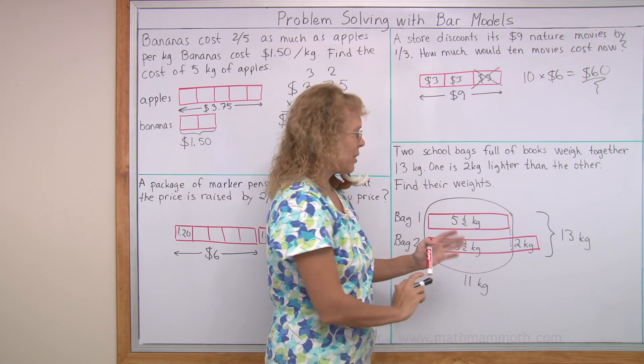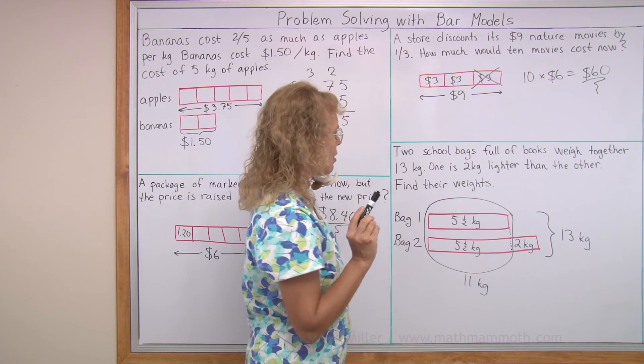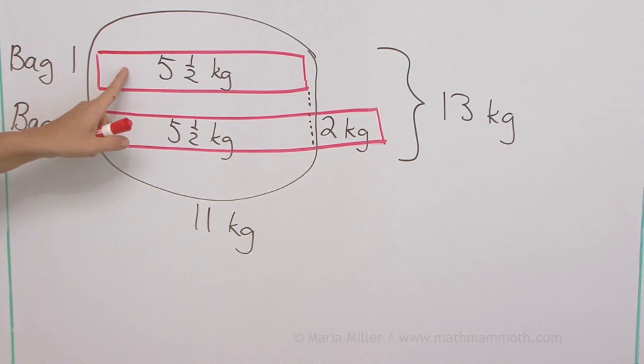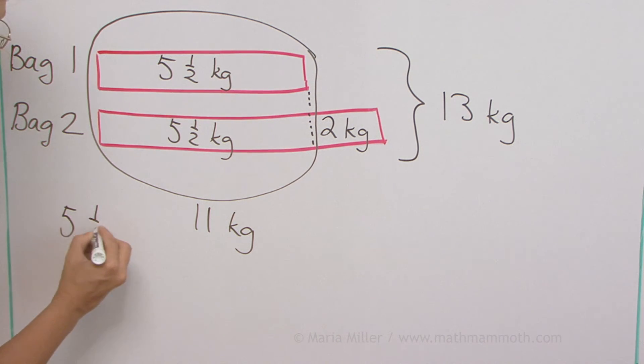So essentially we have now solved it, but what is it asking? Let's go back to the problem. Find their weights, bag one, 5.5 kilograms, and bag two weighs how much? 7.5 kilograms. So we have 5.5, 7.5 kilograms as the weights.